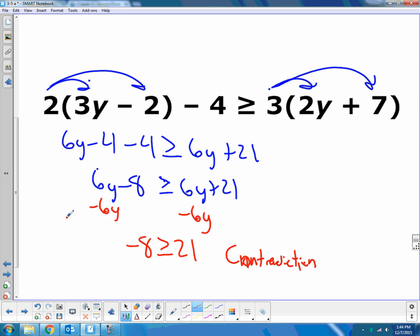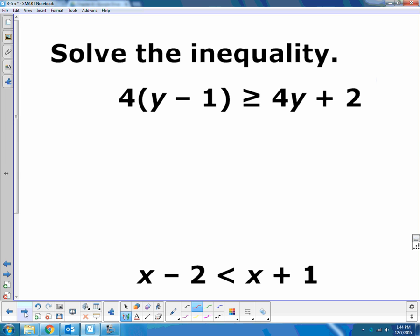So we're solving it just like we solved the other problems in Section 2, just like we solved in Section 5, just like we solved in Chapter 2 with an equal sign. Now we're just looking at when they're always true identity or when they're never true contradiction. Try these two on your own.